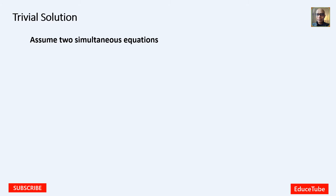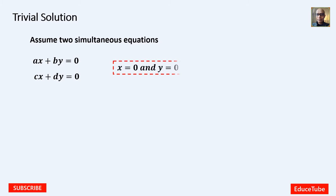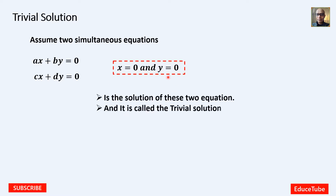Here, I am taking two simultaneous equations. One is ax plus by equal to 0, and another is cx plus dy equal to 0. I have written x equal to 0 and y equal to 0. The reason is, if I put x equal to 0 in these two equations, right away I get the value of y as 0. So we can say this is the solution of these two equations, and it is called the trivial solution.